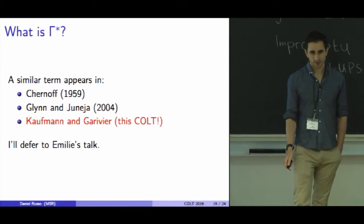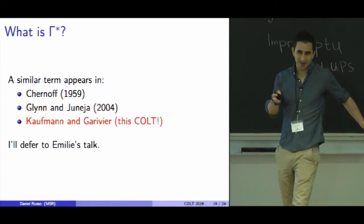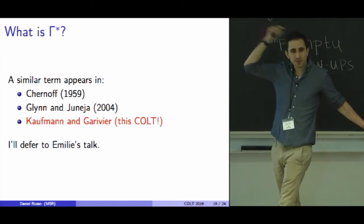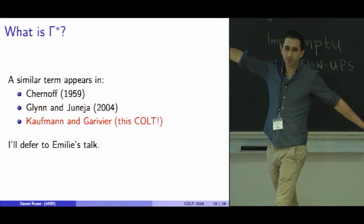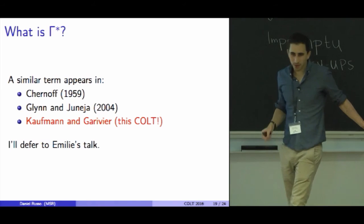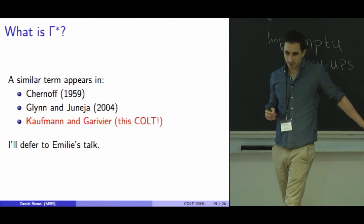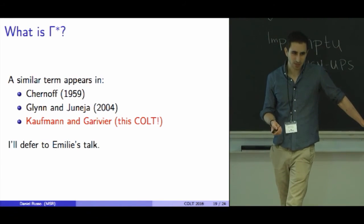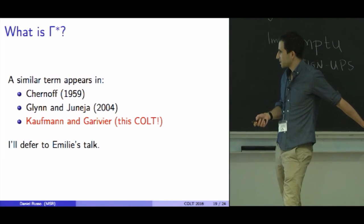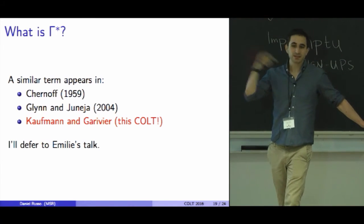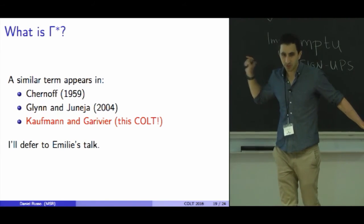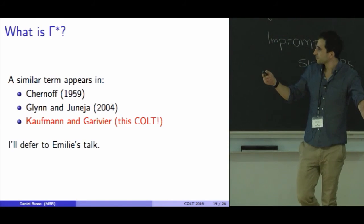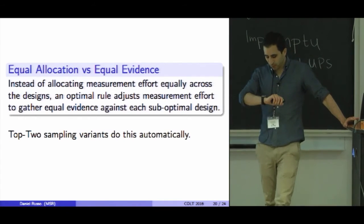What is γ*? I'm thankful here that I can basically just defer to the next talk to define γ*. This γ* has appeared in similar ways in some past work. I learned a lot by going through this classic paper by Chernoff on the sequential design of experiments. There's a paper by Glynn in the simulation optimization literature that characterizes something like this. And from this COLT, we'll see a different best arm identification problem under which the exact same exponent arises.